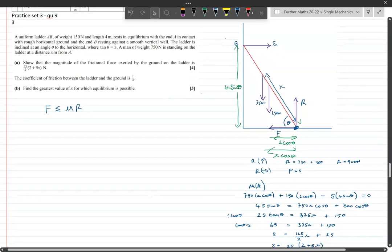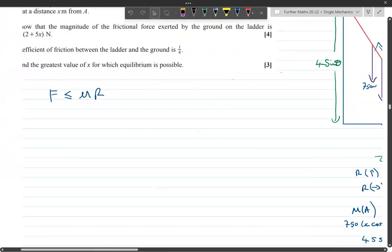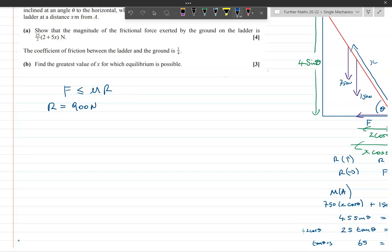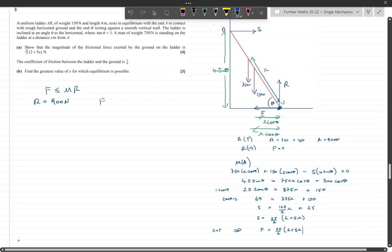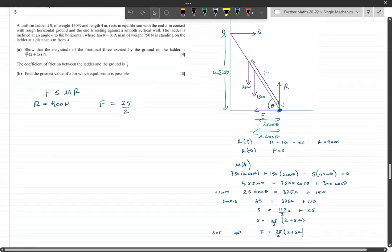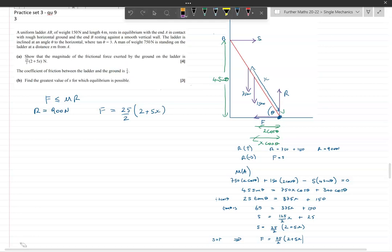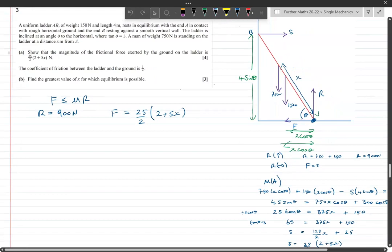We didn't need it before, but I'll write it again because in the exam they probably have separate space for each part. R equals 900 newtons we already know, and F equals 25 over 2 times (2 plus 5x), and we're told that μ is a quarter. We can just sub those into the inequality and rearrange to get our greatest value of x.